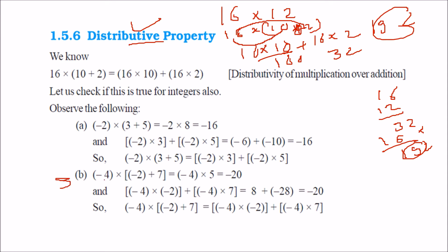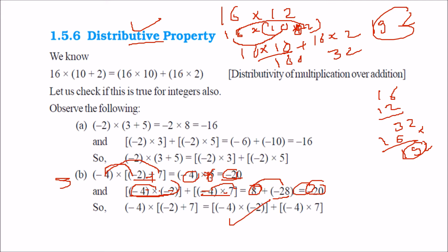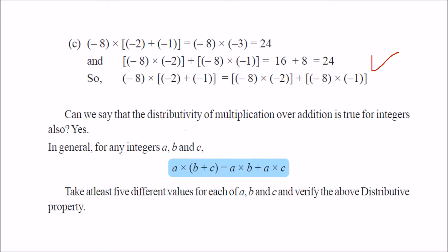Let us take another example: minus 4 into (minus 2 plus 7). First, solving inside the bracket: minus 2 plus 7 is 5, and 5 multiplied by minus 4 is minus 20. Now distributing: minus 4 into minus 2 gives 8 (minus minus is plus), and minus 4 into 7 gives minus 28. Then 8 minus 28 is minus 20. Both methods give minus 20. So, a into (b plus c) can be written as a·b plus a·c — that is the distributive property.